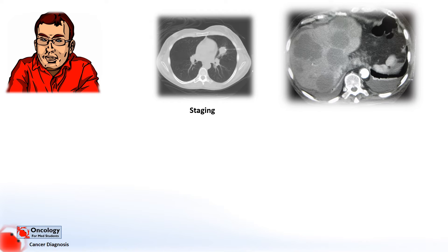The stage normally determines whether localised treatments — namely surgery and radiotherapy — would be useful. Unfortunately, once the cancer has spread, localised treatments can't cure the cancer and are only really used if they might have an effect on relieving the patient's symptoms. The stage of the cancer is normally determined by imaging. A specialist doctor called a radiologist looks at the images to assess the extent of the primary tumour and whether there is any evidence of spread.